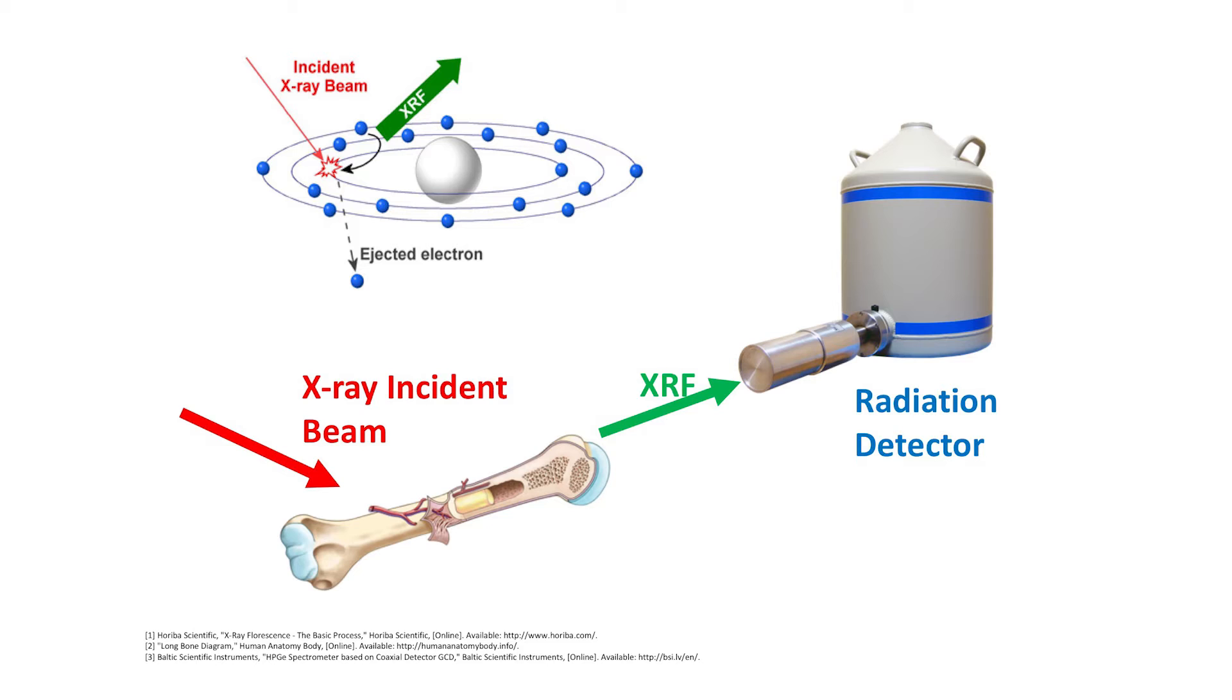This radiation, we can imagine as particles or buckets of energy traveling through space. These buckets of energy reach the sample, which contains the gadolinium, which is bone in this case.